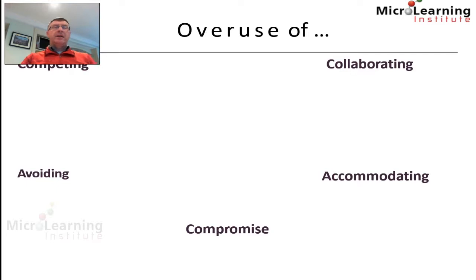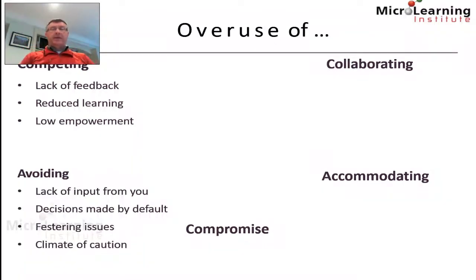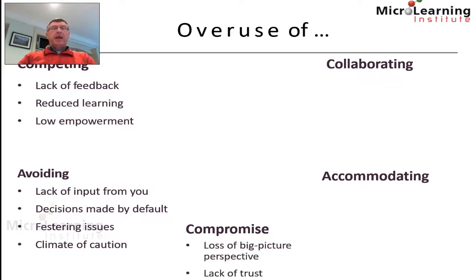Overuse of competing can lead to a lack of feedback, as colleagues feel there's no point contributing when someone always aims to win. Teams won't be empowered and the organisation learns less. Overuse of avoiding results in a lack of input, decisions made by default, issues left to fester, and a climate of caution. Overuse of compromising means losing the big picture, creating a cynical climate where nothing is ever fully resolved.